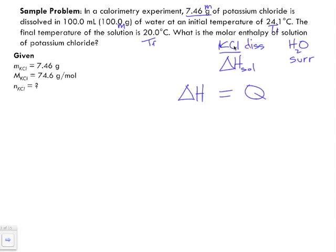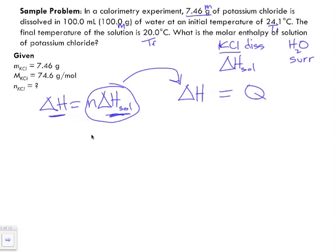Delta H represents the potassium dissolving, and Q represents the water. Delta H is equivalent to N times delta H of the reaction, which happens to be a solution. We need to find this molar enthalpy of the actual solution. We'll substitute into this equation, since we can find N using mass and molar mass — think stoichiometry — to calculate the number of moles.